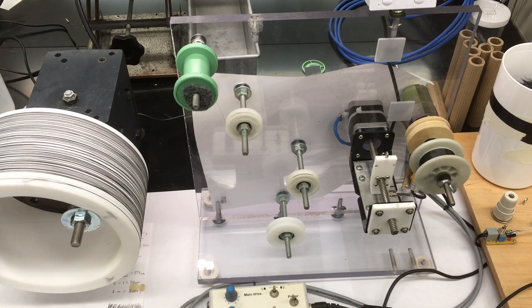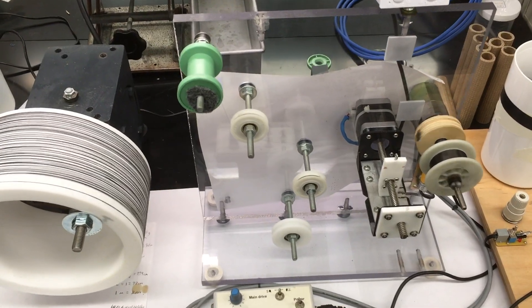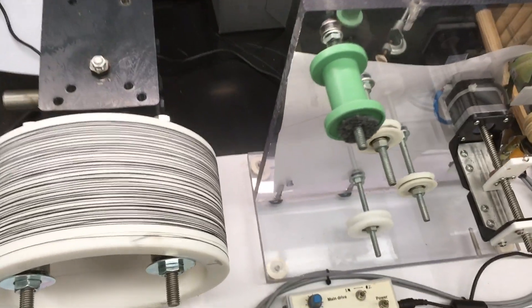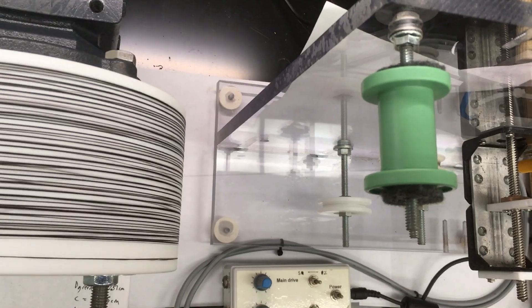The first step is to take the fibers off the large collection drum on the left and wind them onto smaller spools.